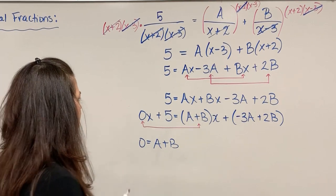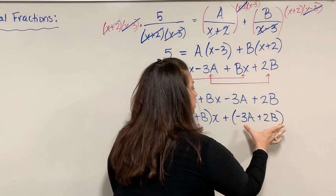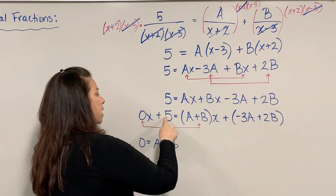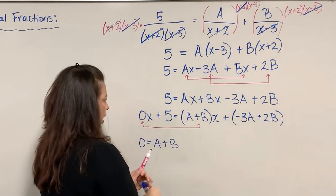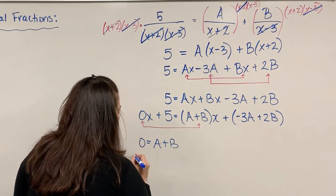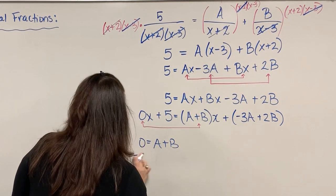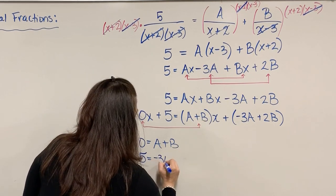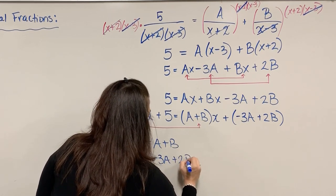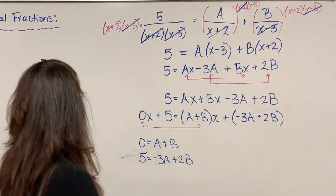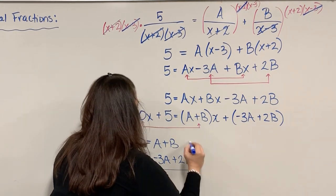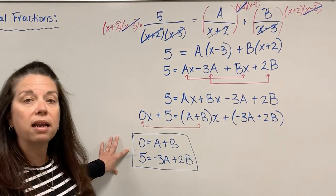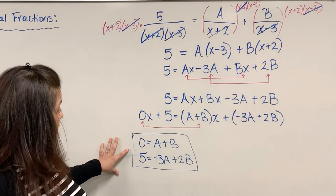I can match up this set of expressions in the parentheses with the 5. So I have another equation, 5 = -3A + 2B. I'm going to box this. What this whole process has revealed is a system of equations that have two variables, A and B.